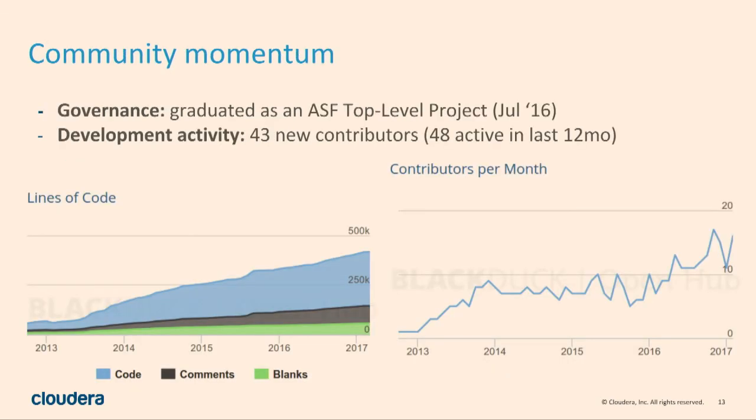Just a couple of stats over the last year or two from OpenHub, which is an open source tracking site. Lines of code is a silly metric, but you can see we're continuing to add more stuff, more tests, more features. Maybe the more exciting one is contributors per month. Back in 2013, that line is either one or two — I think it's myself and somebody else. Now we're averaging between 10 and 15 unique contributors per month. Over 12 months, we have 48 active contributors. So the community really is growing.